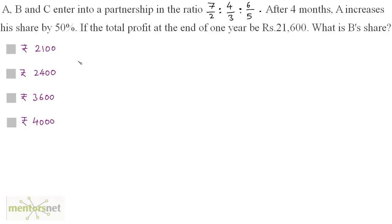A, B and C enter into a partnership in the ratio of 7 by 2 is to 4 by 3 is to 6 by 5. After 4 months, A increases his share by 50%. If the total profit at the end of one year is Rs 21,600, what is B's share?